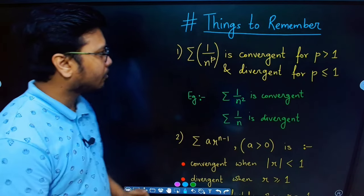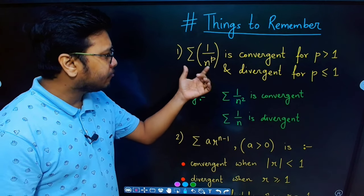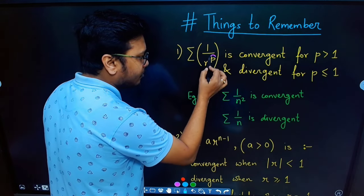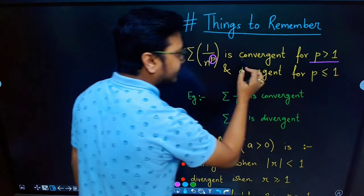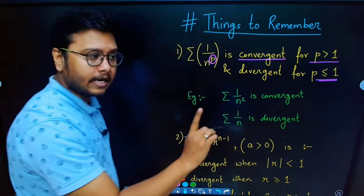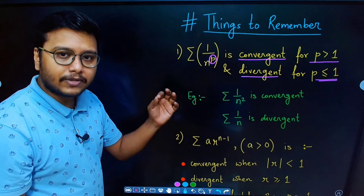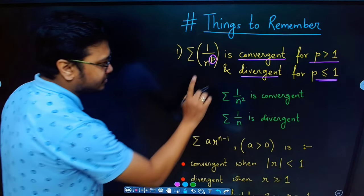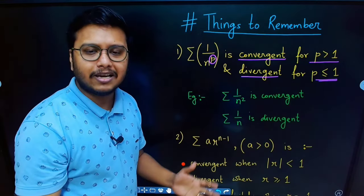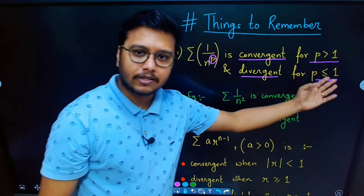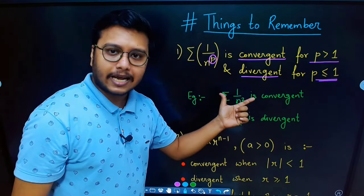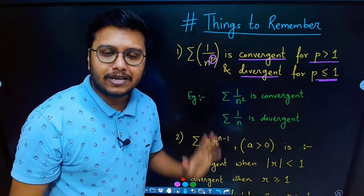Before we get started, here are some things to remember. If I have an infinite series of the form 1/n^p, this is called the p-test. If the value of p is greater than 1, the series is convergent. If p is less than or equal to 1, the series is divergent. For example, if p equals 2, then summation 1/n² is convergent. Summation 1/n, where p equals 1, is divergent.